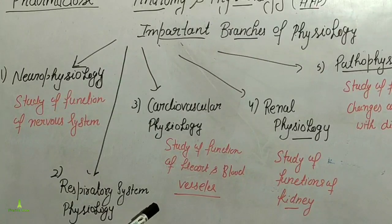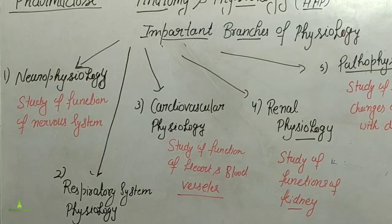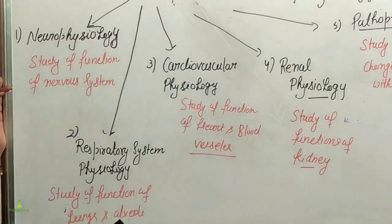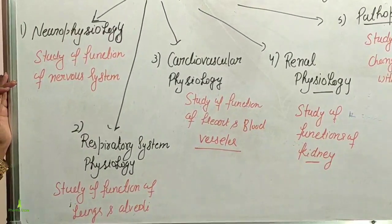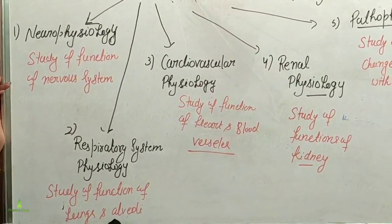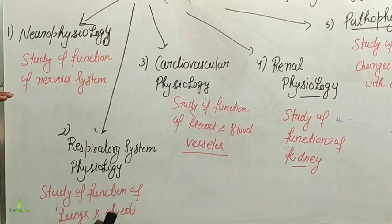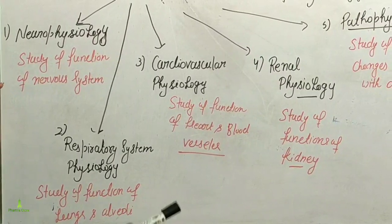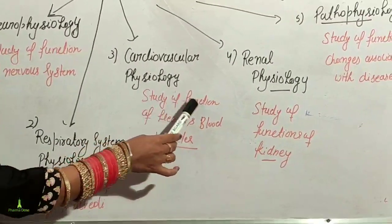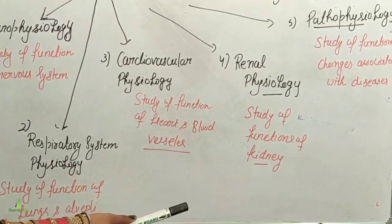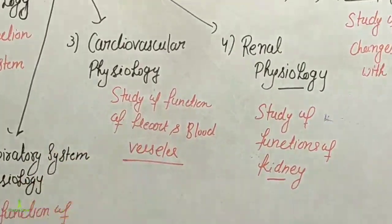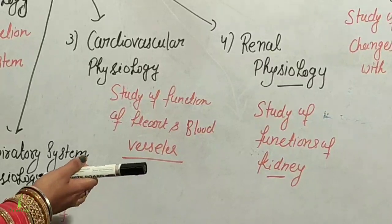Next is Respiratory Physiology — the study of the respiratory system, in which the lungs, trachea, and related structures are involved. Then Cardiovascular Physiology — the study of the function of the heart and blood vessels, including arteries and veins.